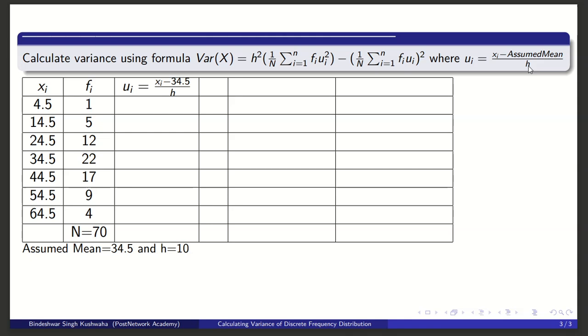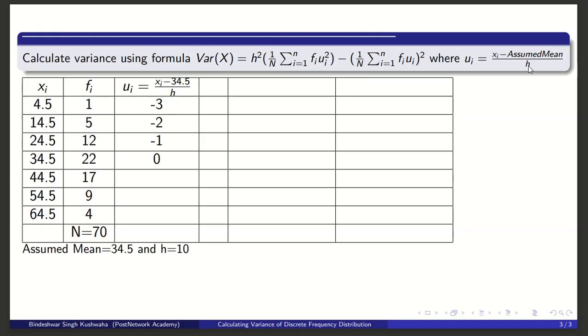Let us calculate value of ui, so ui = (xi - 34.5)/h where h is 10. The first value would be -3 because you subtract 34.5 from 4.5 and divide by 10. Next is -2, so from 14.5 you subtract 34.5 and divide by 10.